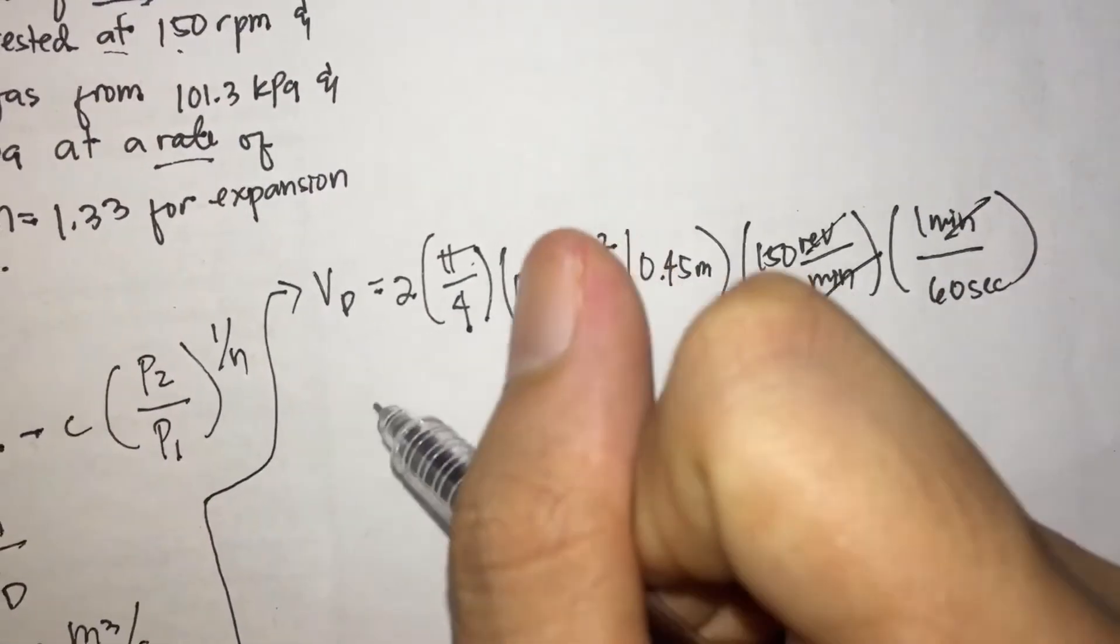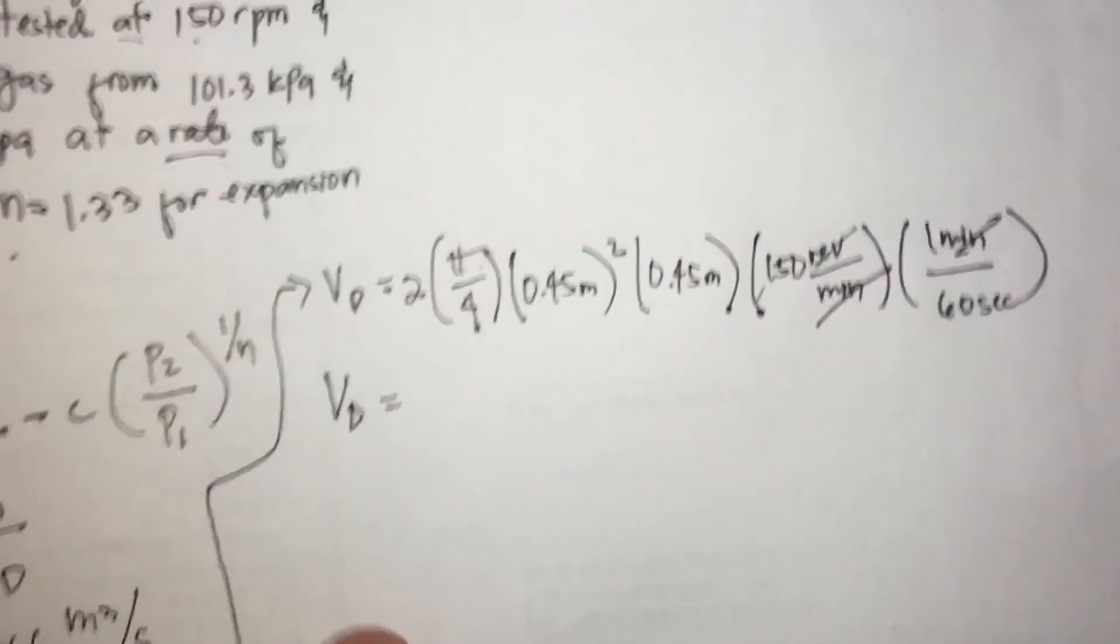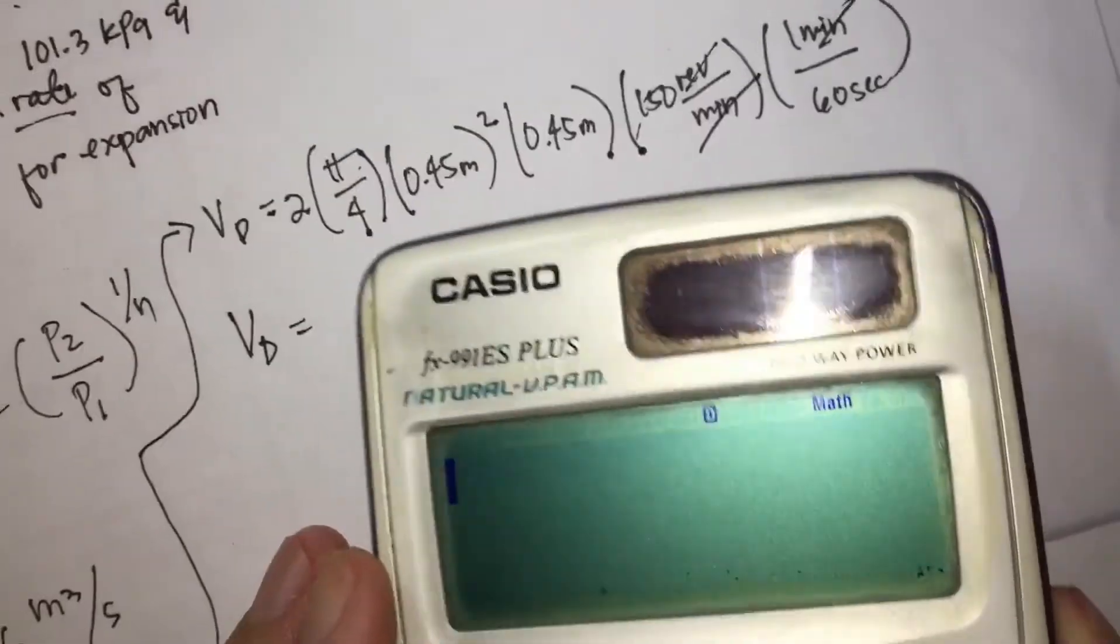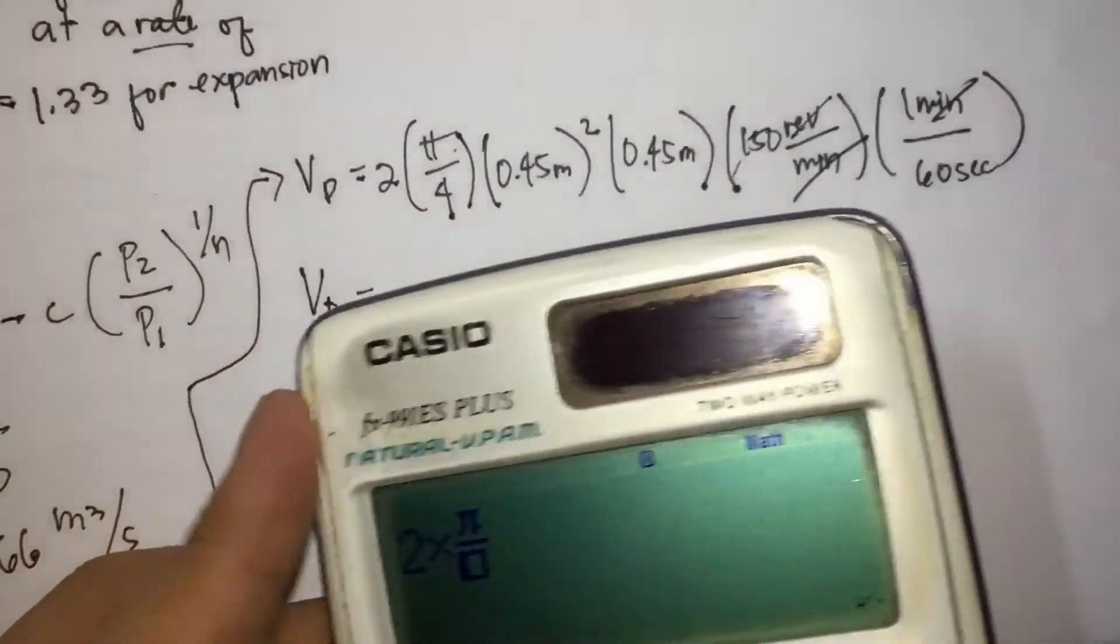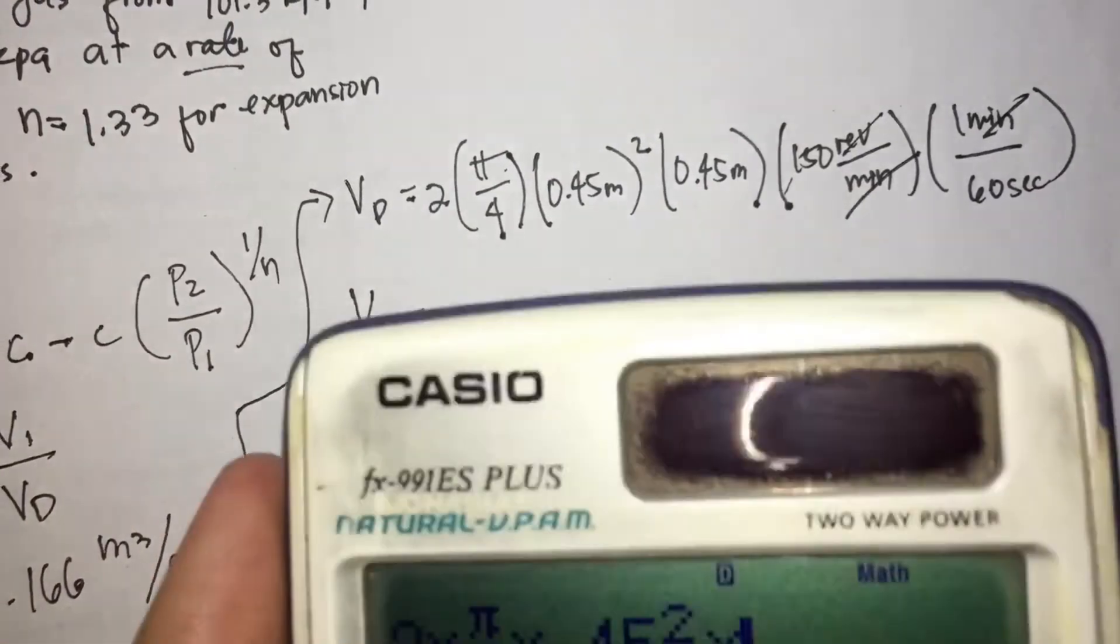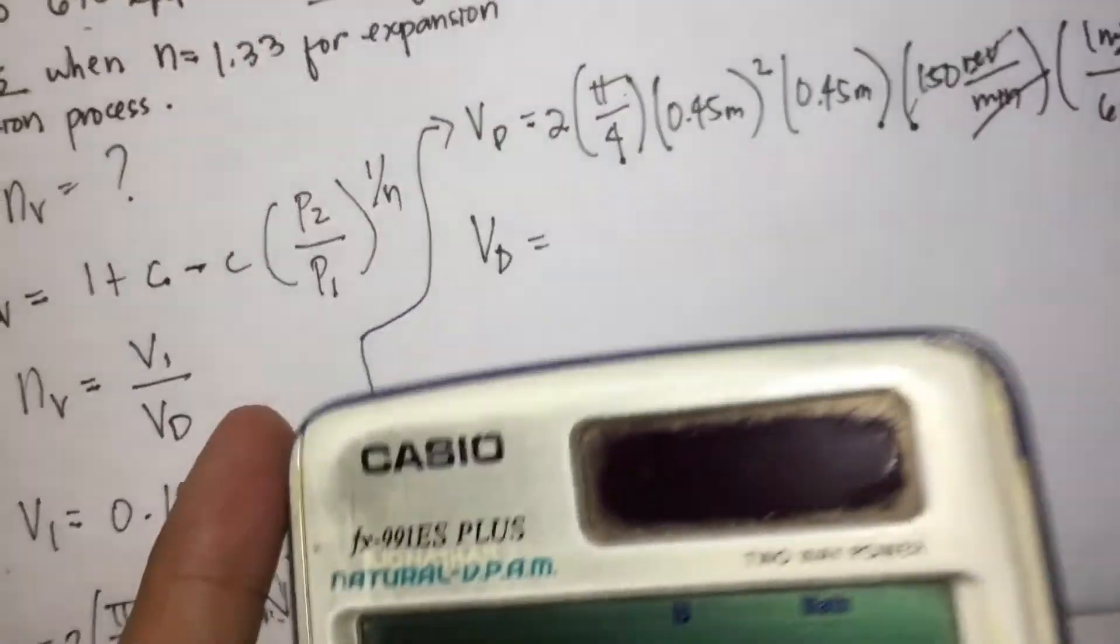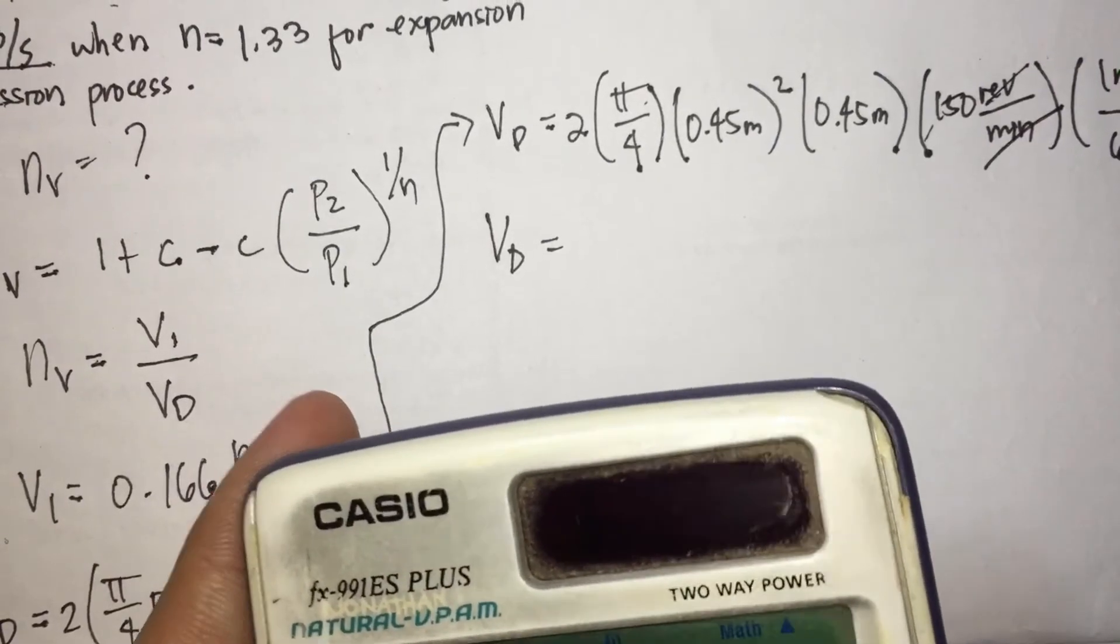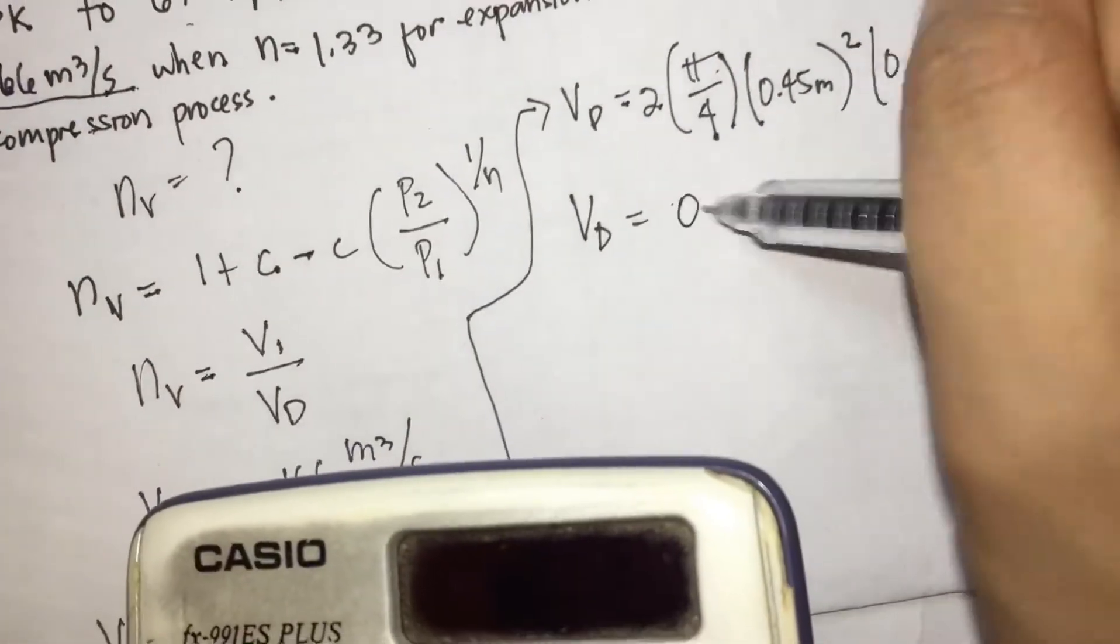So it will be, volume displacement will be 2 times pi over 4 times 0.45 squared times 0.45 times 150 divided by 60. So that is 0.3578 meter cube per seconds.